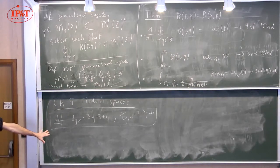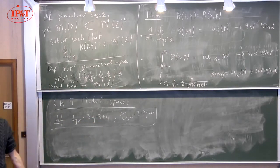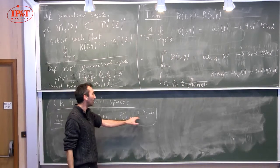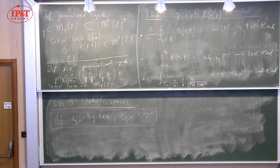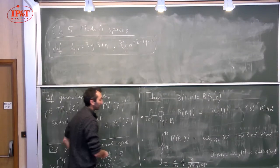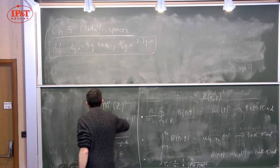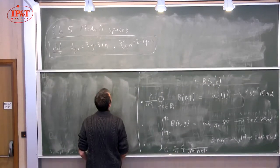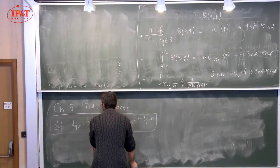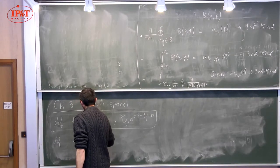Let's take a break and then talk about moduli spaces. For notation: I call D_{g,n} the number 3g - 3 + n, which is the dimension of the moduli space, and chi_{g,n} = 2 - 2g - n, which is the Euler characteristic of surfaces of genus g with n boundaries or punctures. These numbers come up almost everywhere in computations.